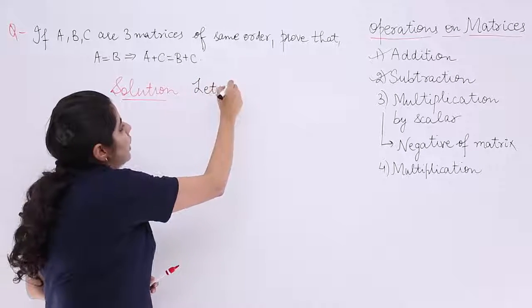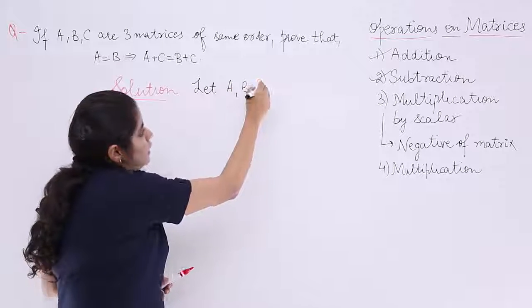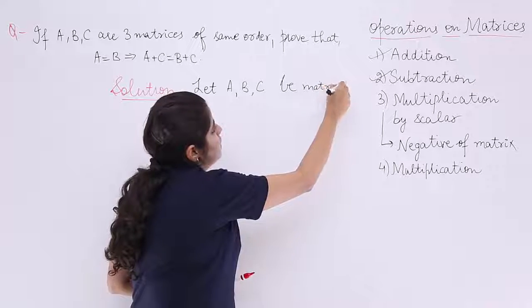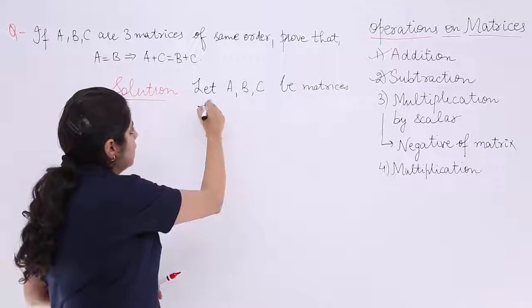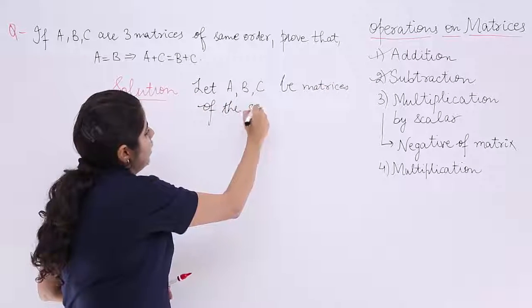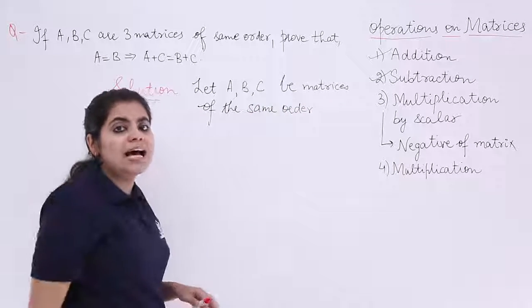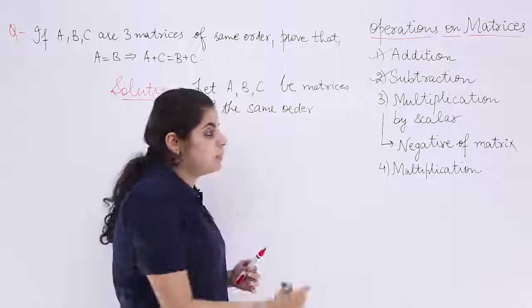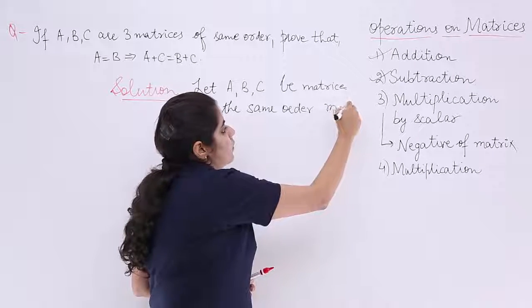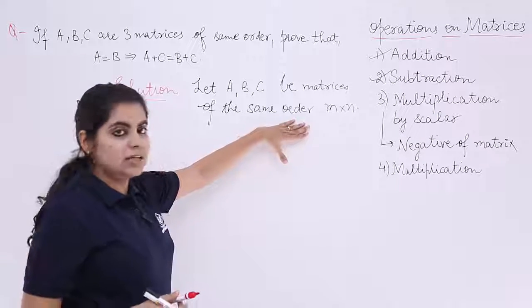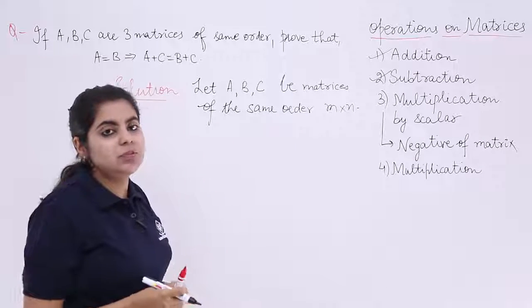So let A, B, C be matrices of the same order, and I take the order as M by N. You can take it as P by Q, anything. M by N means what? M rows, N columns.